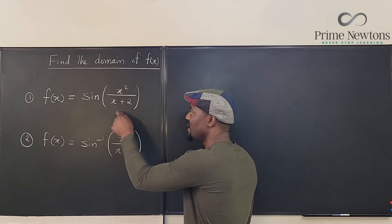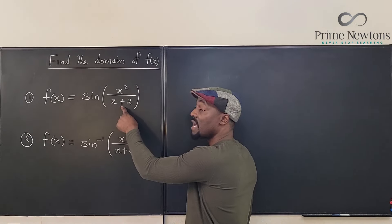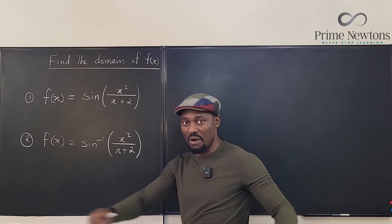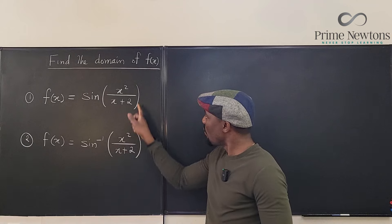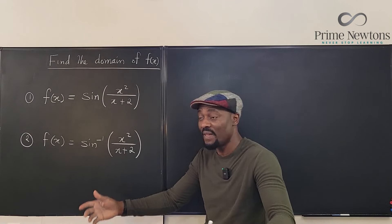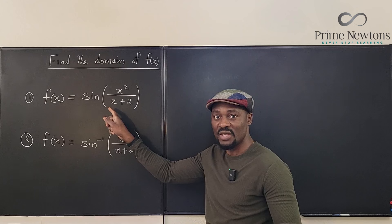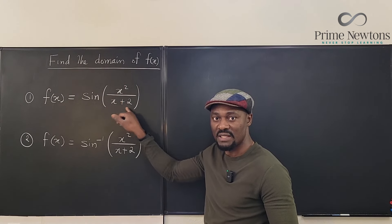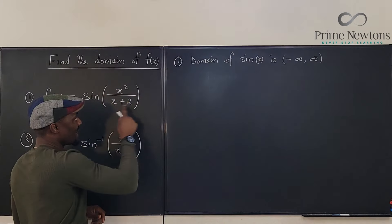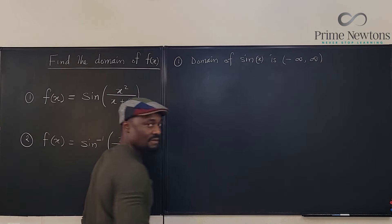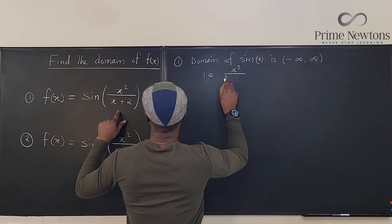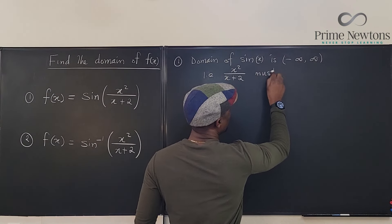So the only problem we might have is with this input. Remember, the domain of the sine function is from negative infinity to infinity, so whatever you have here just has to be on the number line. So under what condition will this expression not be on the number line? It is if it is not defined or not real. And the only way this will not be real is if you are dividing x squared by zero. So the only problem we'll have is this denominator — x squared over x plus 2 must be defined.